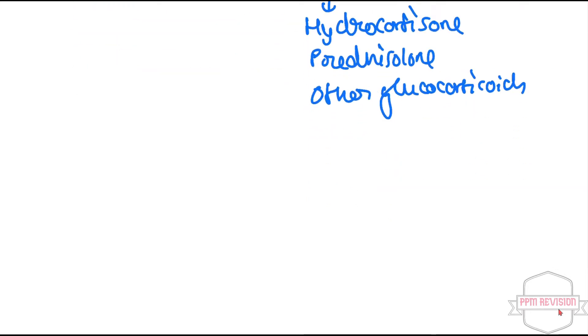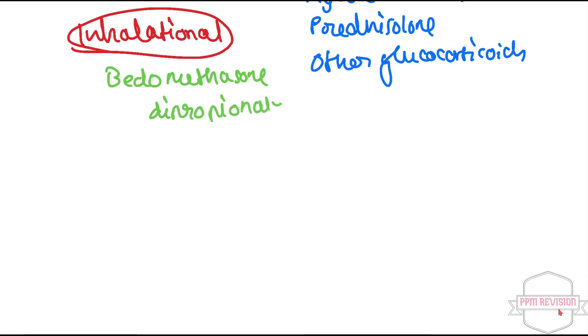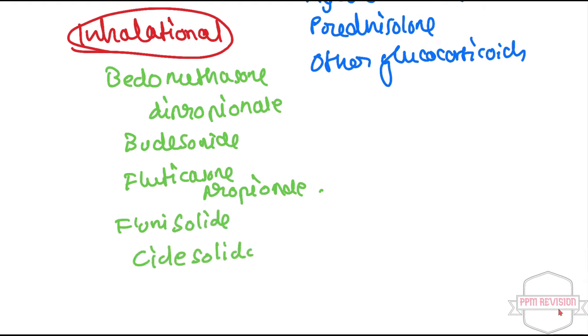Next, other category under corticosteroids is inhalational. Under this inhalational category, examples include beclomethasone dipropionate, budesonide, there is fluticasone propionate, flunisolide, and ciclesonide.